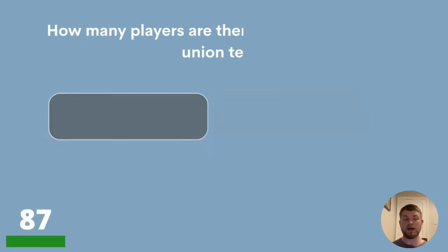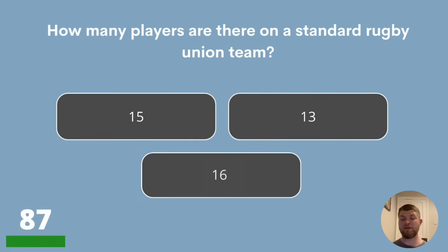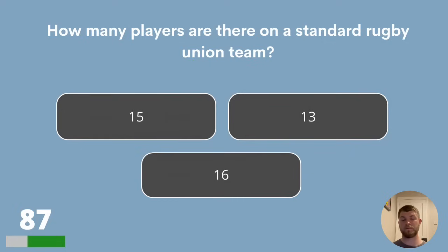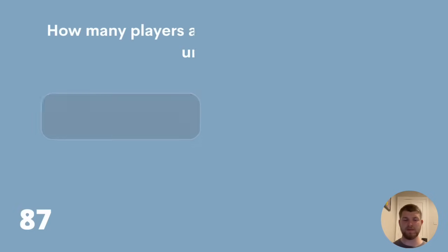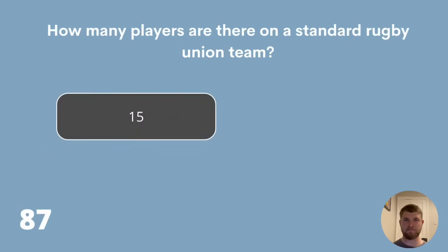Question 87. How many players are there on a standard rugby union team? 15, 13 or 16? On a standard rugby union team there are 15 players.